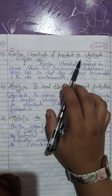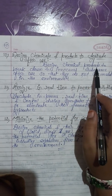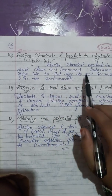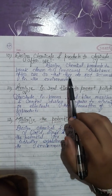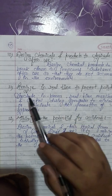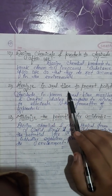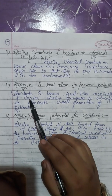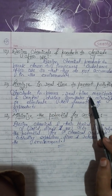Ten, design chemicals and products to degrade after use: design chemical products to break down into innocuous substances after use, so that they do not accumulate in the environment.